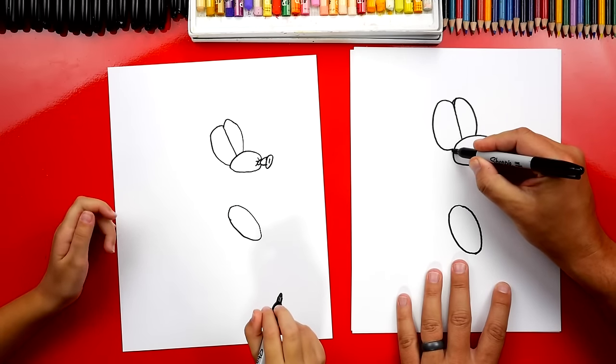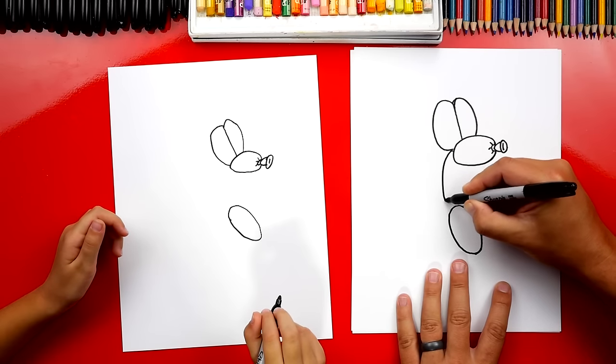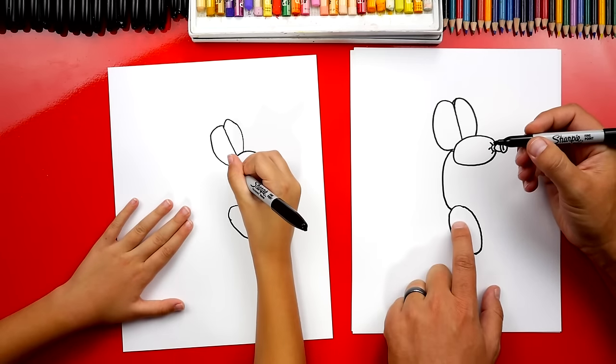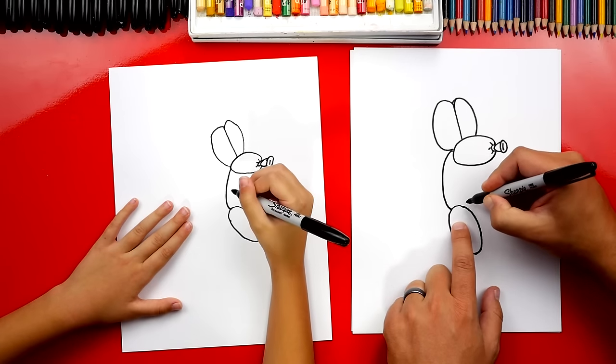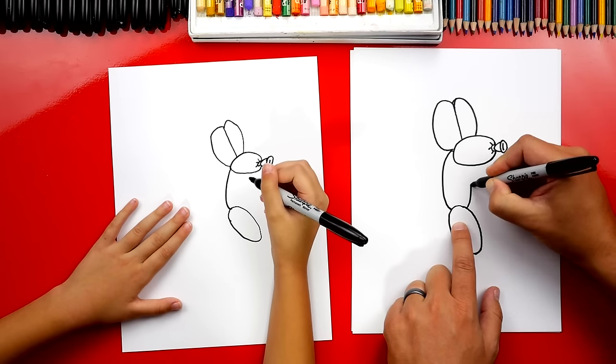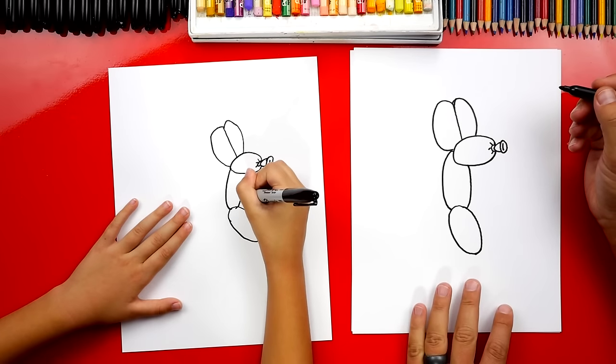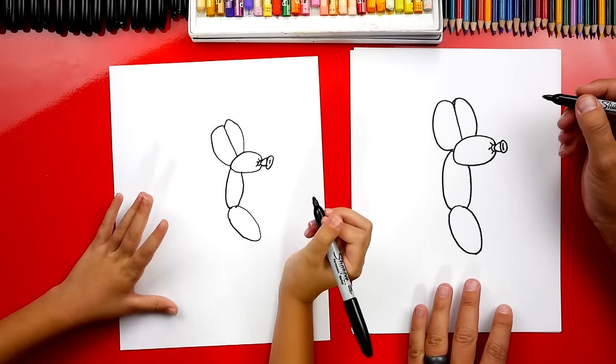Now let's draw his neck. We're going to start right here and we're going to draw a curve that comes down and connects to that first leg. And then we're going to imagine it going behind the leg, coming up like this and connecting to his head. Oh, he's starting to look like a dog.